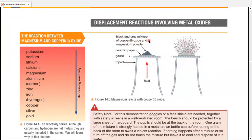Let's take an example: a black and gray mixture containing copper(II) oxide and magnesium powder. In these reactions, the more reactive element is taken in its pure form and the less reactive one is in compound form. Since magnesium is in pure form, it must be more reactive, and copper is in compound form, so it must be less reactive. If the reaction occurs, magnesium is definitely more reactive than copper.